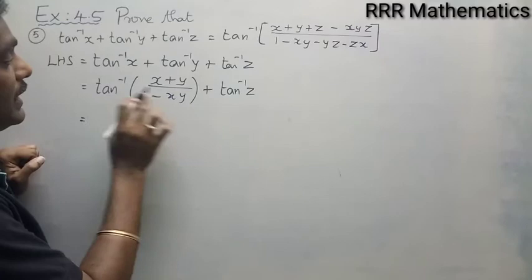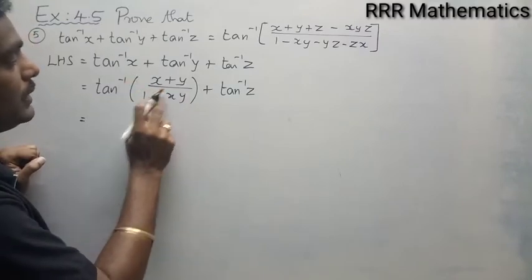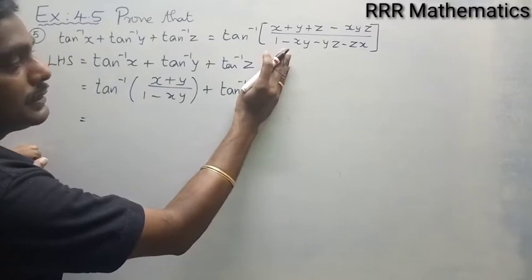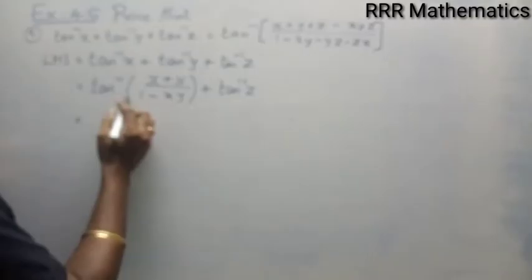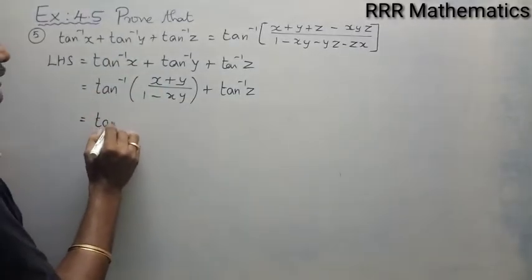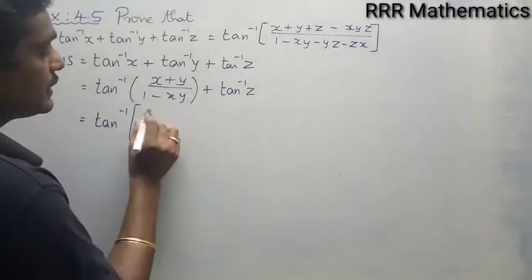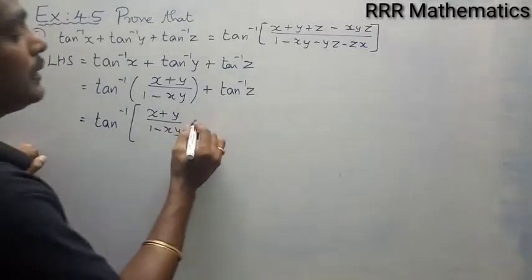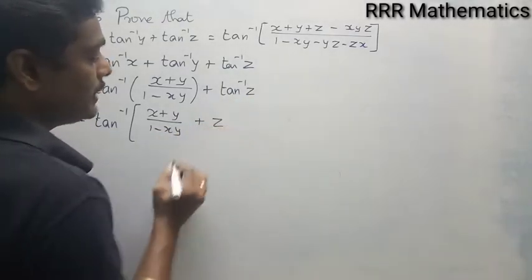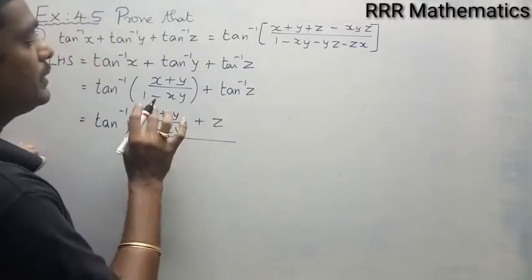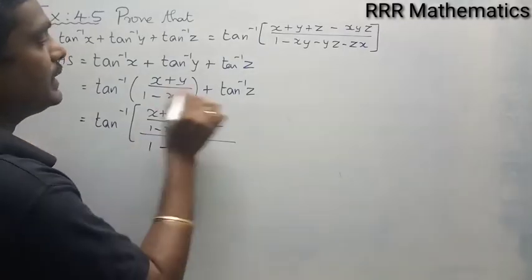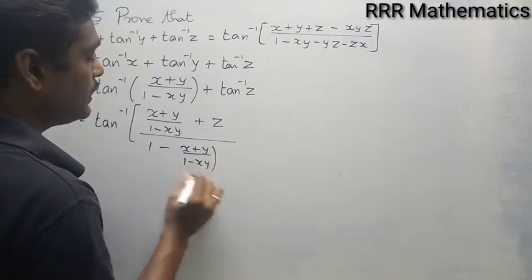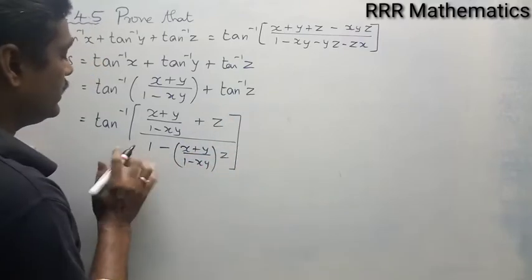Now consider the combined term tan inverse of (x plus y) divided by (1 minus xy) as a single term — call it x — and tan inverse z as y. Applying the same formula gives tan inverse of [(x plus y)/(1 minus xy) plus z] whole divided by [1 minus (x plus y)/(1 minus xy) times z].